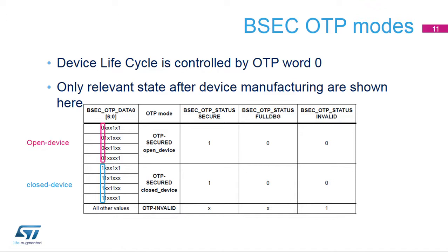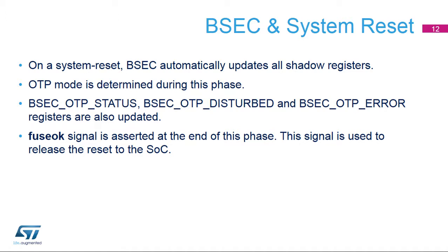Once the secret is provisioned into the OTP words during manufacturing, the device state is set to OTP secured. The transition from open device to closed device state is controlled by programming OTP word 0 bit 6 to 1. If OTP fuse word 0 is compromised, the device is set into OTP invalid state, which is an end-of-life state protecting OTP secrets. On a system reset, BSEC automatically updates all shadow registers. OTP mode is determined during this phase. BSEC OTP status, BSEC OTP disturbed, and BSEC OTP error registers are also updated. The fuse OK signal is asserted at the end of this phase and is used to release the reset to the SOC.